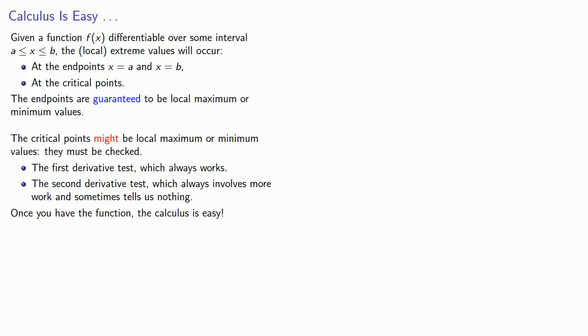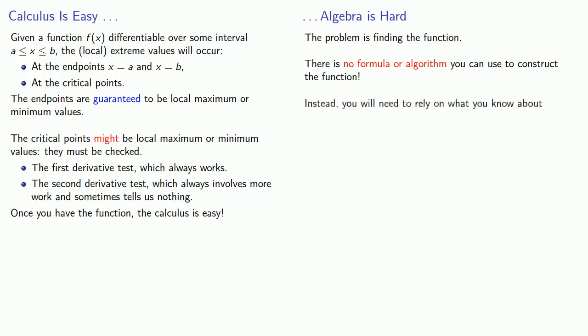So why are optimization problems hard? The problem is finding the function. There is no formula or algorithm that you can use to construct the function you need to optimize. Instead, you will need to rely on what you know about algebra, geometry, life, the universe, and everything.